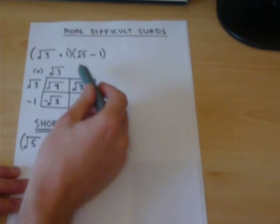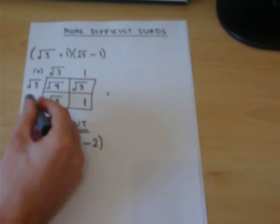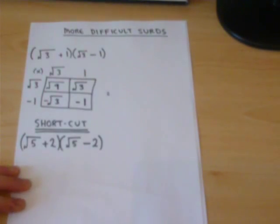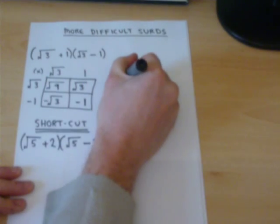Then we have one times one, which is one. And we have a negative, so there we go. And the answer is the sum of all these things. So, root of nine, ah yes, that equals three.